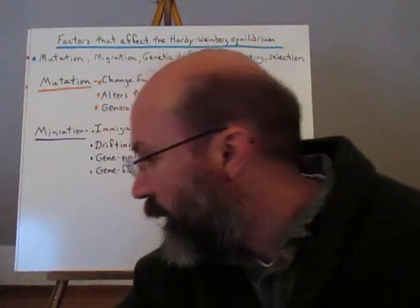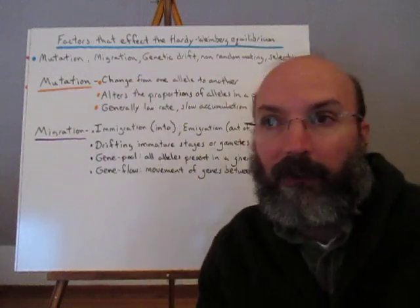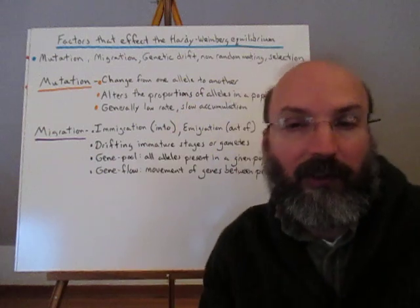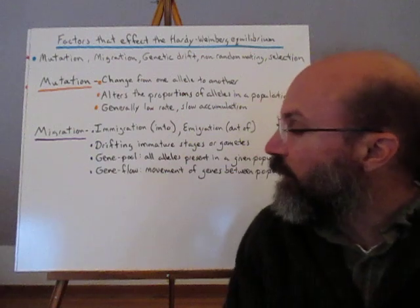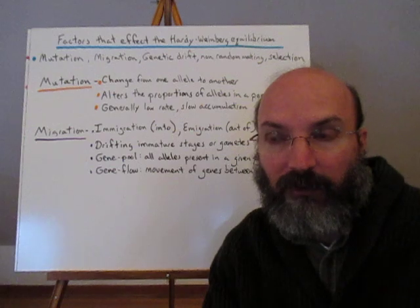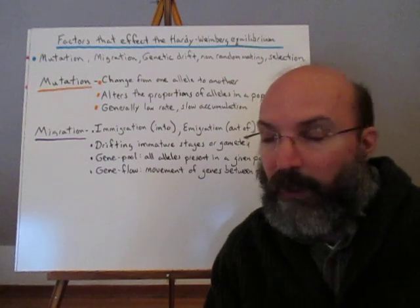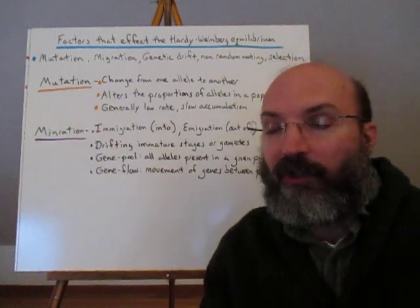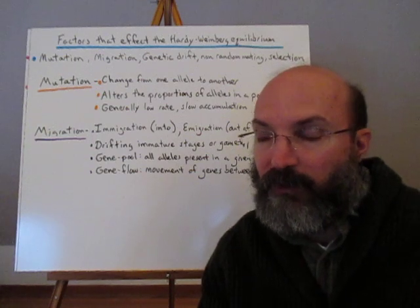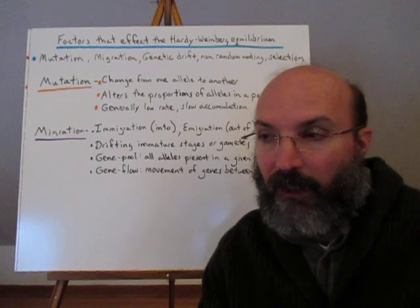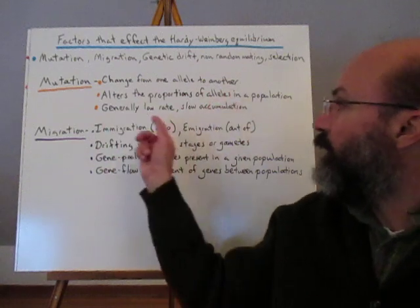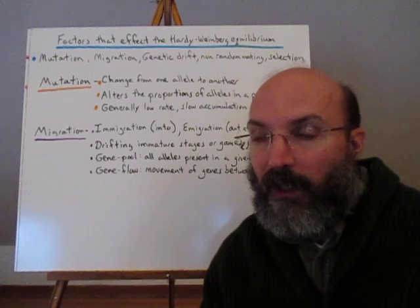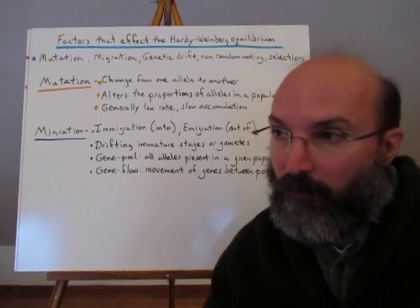In evolutionary terms, there are factors that affect the Hardy-Weinberg equilibrium: mutations, migration, genetic drift, non-random mating, and selection. Selection is the one that leads to evolutionary change. These factors change gene frequencies so they don't remain constant, leading to microevolution which could eventually lead to macroevolution. Mutations are any change in the allele — deletions, duplications, translocations — and they alter allele proportions. It's generally a slow process; mutations occur in few individuals, but if favorable, a gene could be selected for.